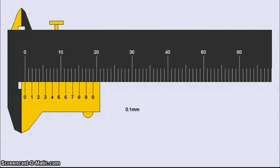Usually, zero on the main scale and zero on the vernier scale should be in line with each other. In such a scenario, there is no zero error.